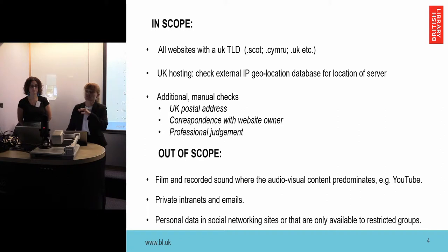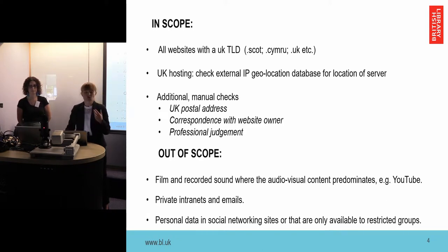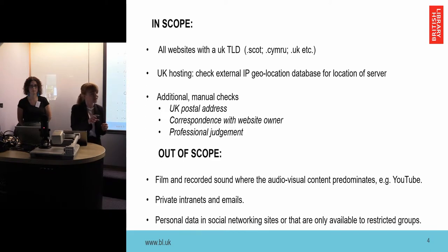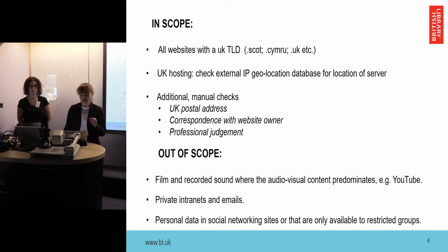We can automatically scope in websites that sit on a UK top-level domain name — .uk, .scot, .com — or we can target a website hosted on a server physically located in the UK with a GEOIP lookup. Some things are specifically excluded from the legislation: sites that constitute an audio-visual channel, for example YouTube or BBC iPlayer. We can't archive these channels, but we can archive a website where a YouTube video or audio file is incidental to the website. We don't archive private internet — this kind of private material is out of scope, as is content not considered published.